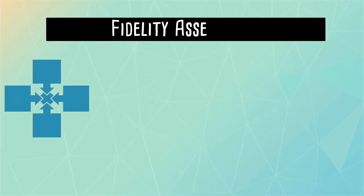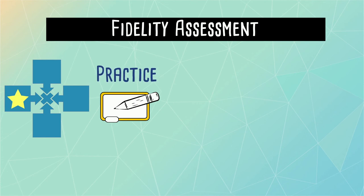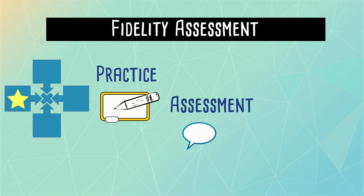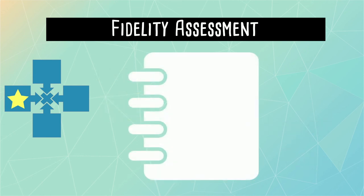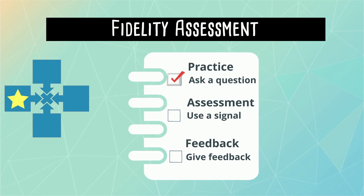We need a fidelity assessment to know if those components are in place so outcomes can improve. In other words, what would Ms. Chow observe Mr. Wallace doing for practice, assessment, and feedback while using ASR? In school, fidelity assessments are typically classroom observations of teachers using those core components. This would include observing the teacher asking questions, providing a signal, and giving feedback. The observation would also include a tally of how many opportunities all students were given to respond.